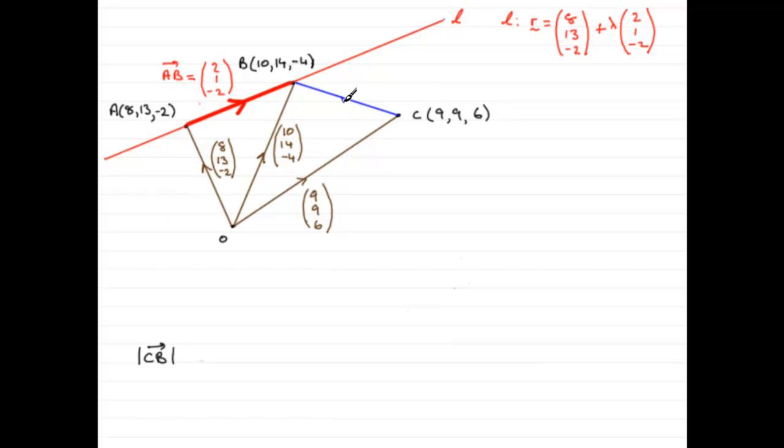C to B, a vector going in this direction, not that it really matters. I mean you could have found the length of the vector B to C, it's going to be the same length, but let's just do C to B.